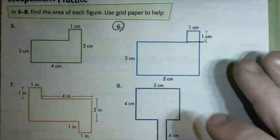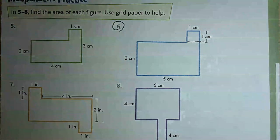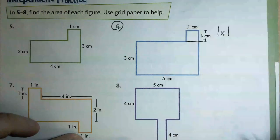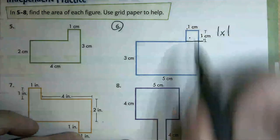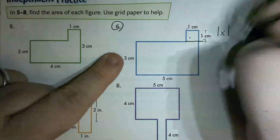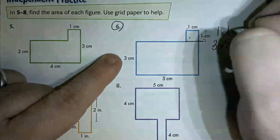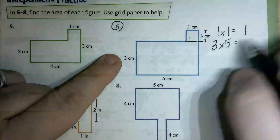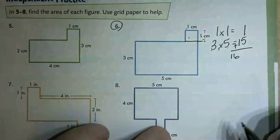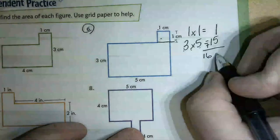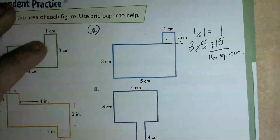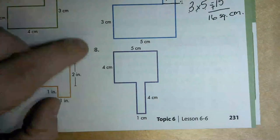Up here we've got one and one, so we're going to do one times one for that first square. Then I've got three times five for the other sides. One times one is 1, three times five is 15, and adding them together gives 16 square centimeters.